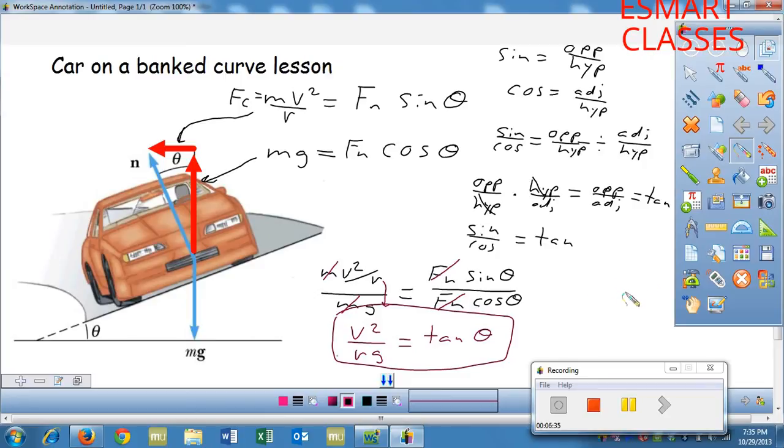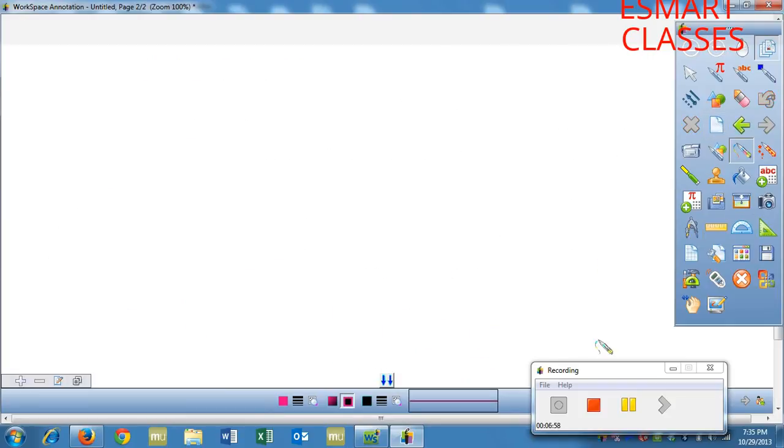v squared over rg equals tan theta. Let's go to a new page.